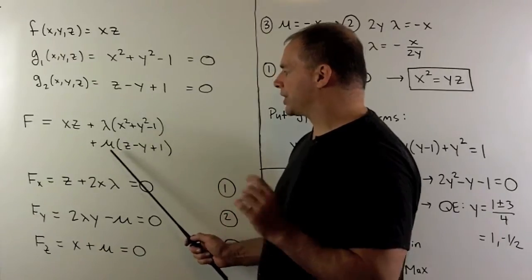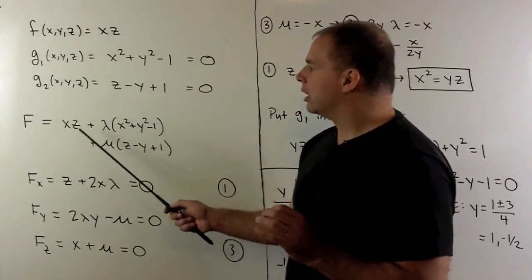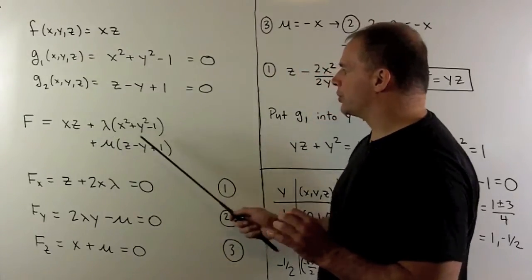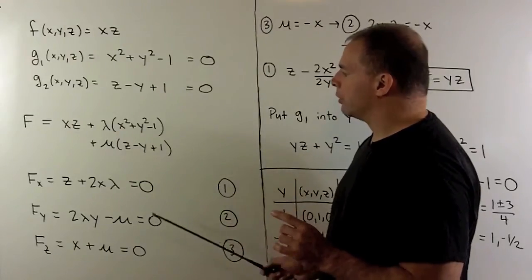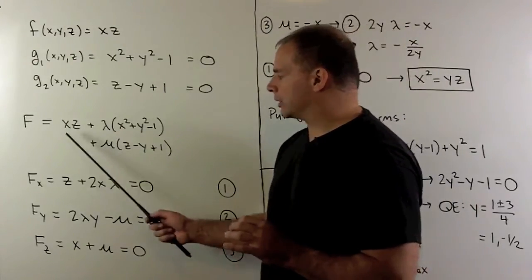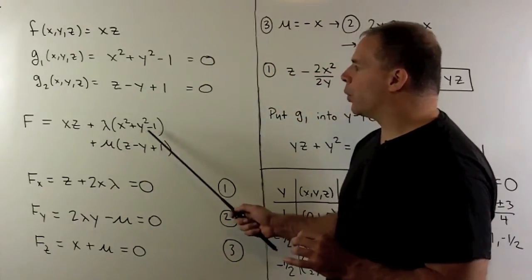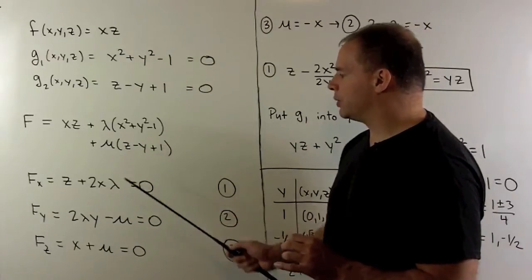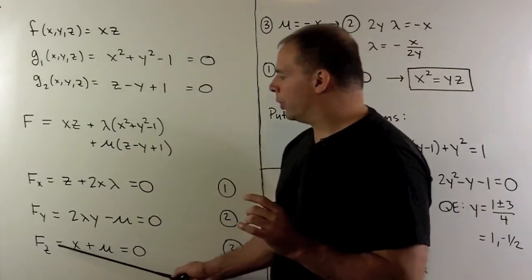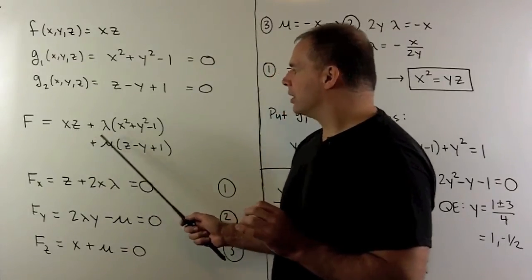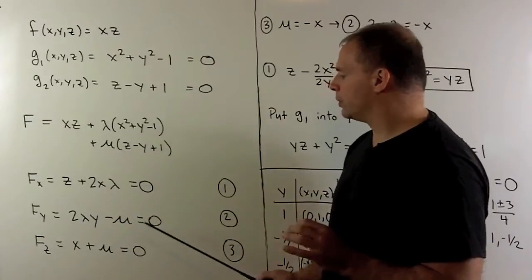We're going to treat lambda and mu as constants. With respect to x, this term goes to z, this term goes to 2x times lambda, this term goes to zero, set it equal to zero. With respect to y, this term goes to zero, we get 2y times lambda, here I get -1 times mu, set it equal to zero. With respect to z, this term goes to x, this term goes to zero, this term goes to 1 times mu, set it equal to zero.